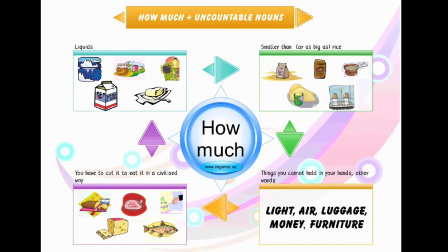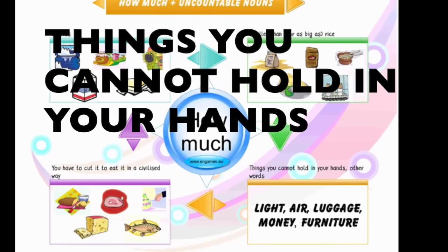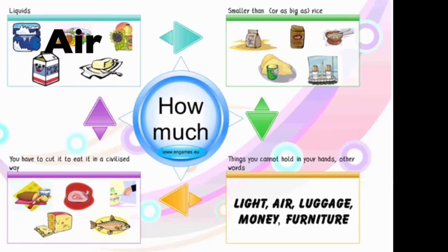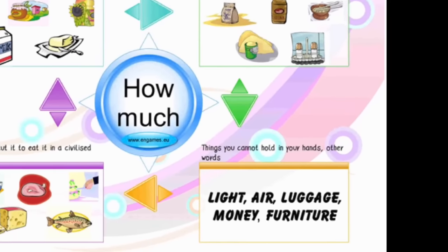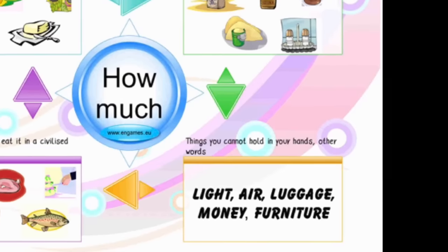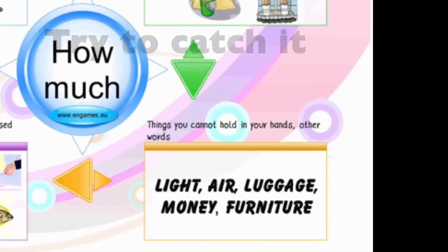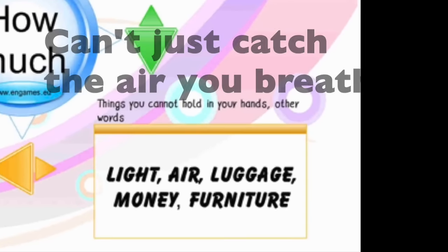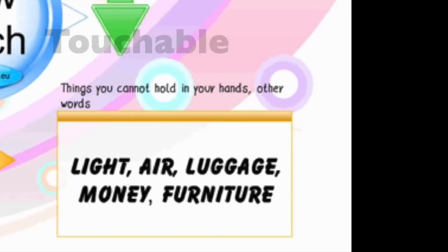Then, the last example is things you cannot hold in your hands. For example, light, air, money, furniture. This is something you can't hold in your hand. Light. Have you ever tried to turn off the light and try to catch it? No. Same thing goes for air. You can't just catch the air you breathe. It's something that's not noticeable and that's not touchable.